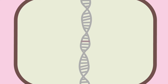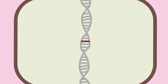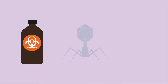What causes mutations? Most mutations occur by chance due to wear and tear on the DNA over time. Mutations can also be caused by things in the environment, like chemicals, DNA viruses, or UV radiation from sunlight.